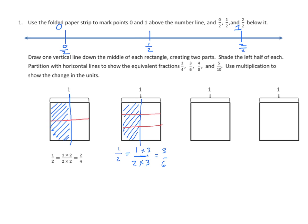Moving along to the next one — again, we're going to partition it in half using a vertical line and shade the left half. This time we're going to 4 eighths, so we're going to need to make three horizontal lines to partition it into four equal parts — 1, 2, 3. Now we can see that we have four parts that are shaded and eight parts in all. Doing the math: 1 half equals 1 times 4 over 2 times 4, representing cutting each half into four parts, giving us 4 eighths.